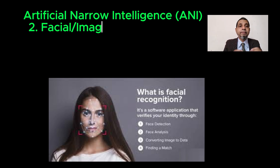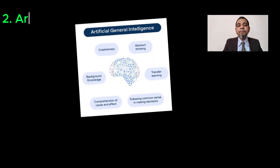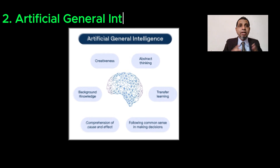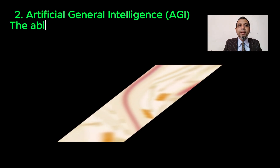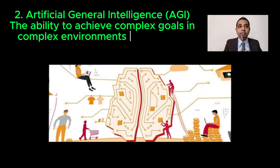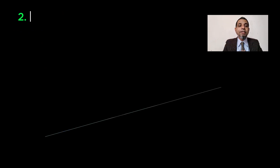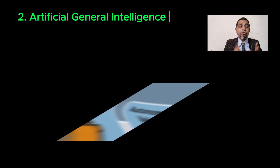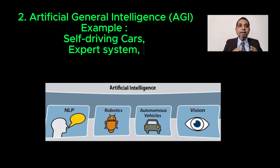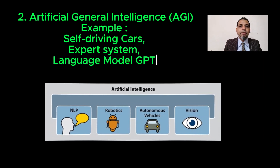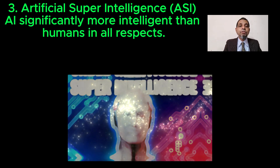Artificial general intelligence, or AGI, is the ability to achieve complex goals in a complex environment using limited computational resources. It is sometimes referred to as strong AI. In another episode I will discuss the difference between strong AI and weak AI. Examples of artificial general intelligence include self-driving cars, expert systems, and language models such as GPT.